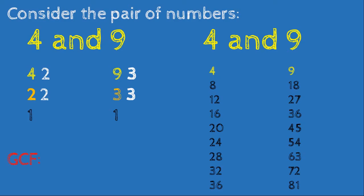Looking at 4 and 9, the only common factor they share is 1, so the greatest common factor is 1. Looking at the multiples, the least common multiple is 36.